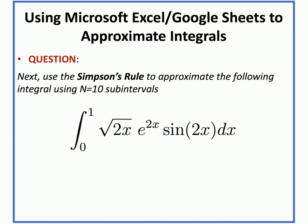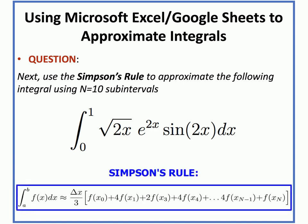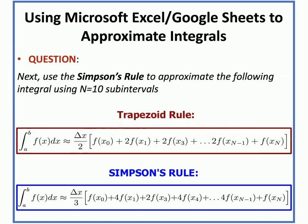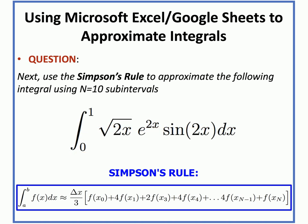Next, we'll approximate the same integral using Simpson's rule with 10 subintervals. Recall that Simpson's rule looks very similar to the trapezoid rule, except we have delta x over 3 out in front, and the interior coefficients on the function values alternate between 4 and 2 — starting and ending with 4 — while the leftmost and rightmost function values each have a coefficient of 1.